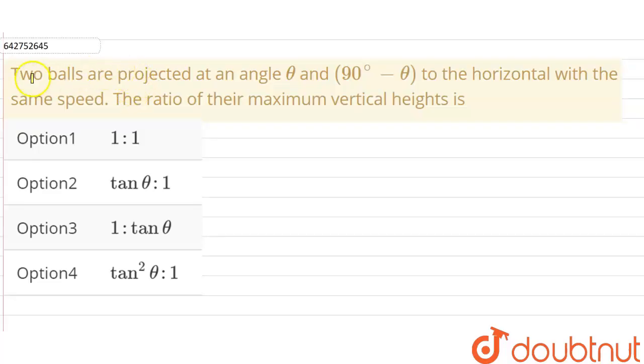Hello everyone, so the question is: two balls are projected at an angle of theta and 90 minus theta to the horizontal with the same speed. The ratio of their maximum vertical height is...